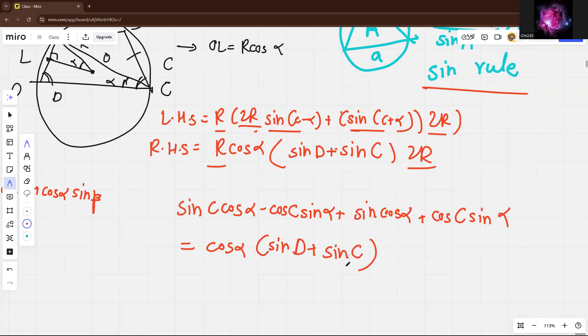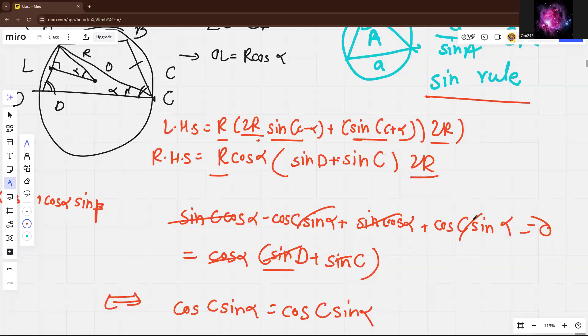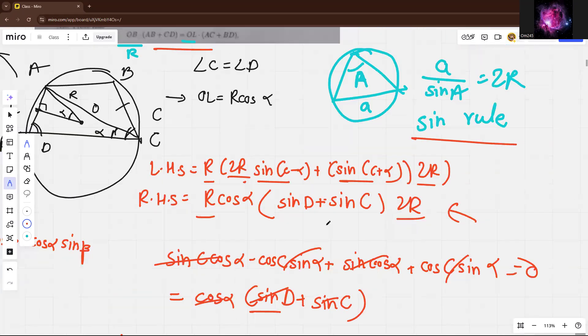Now you know, you can just cancel out this term with this and also this term with this, because sin C and sin D are equal. So what we're left with is cos C sin alpha equals cos C sin alpha, which is true. So you just cancel it and you get zero. Because of this, you get this condition is equivalent and we get this length is equal.